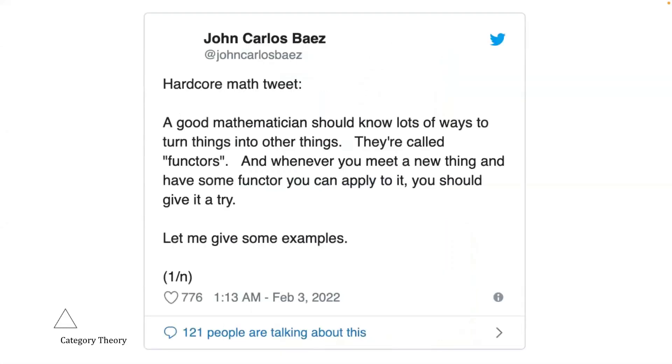Take this tweet, for example, from John Baez, a mathematical physicist working on applications of higher category theory. A good mathematician should know lots of ways of turning things into other things. They are called functors. And whenever you meet a new thing and have some functor, you can apply to it. You should give it a try. He then gives examples of functors, such as the group completion, mapping from monoids to groups, and decategorification, mapping from monoidal categories to monoids.